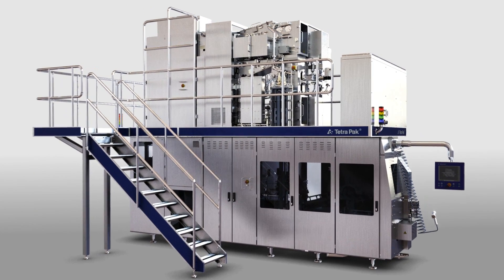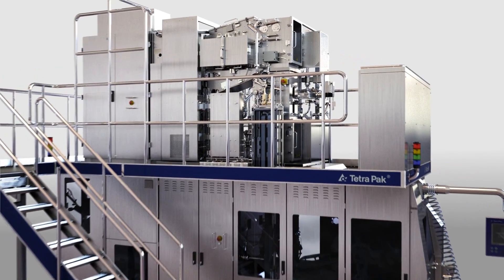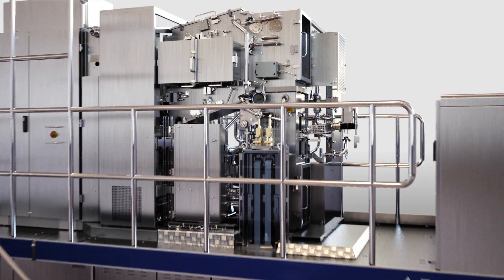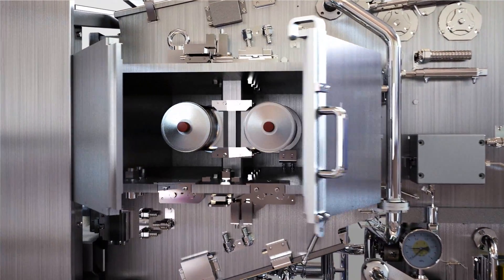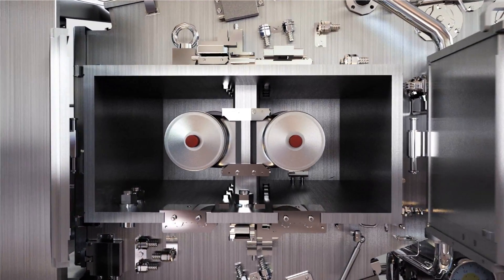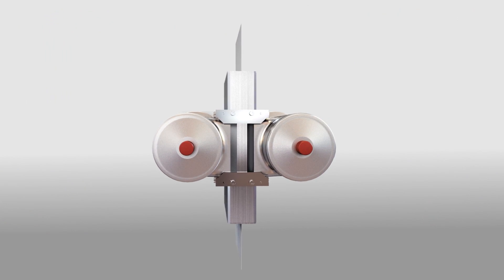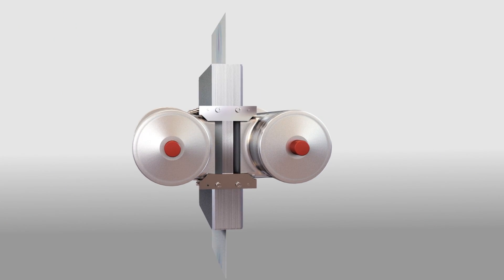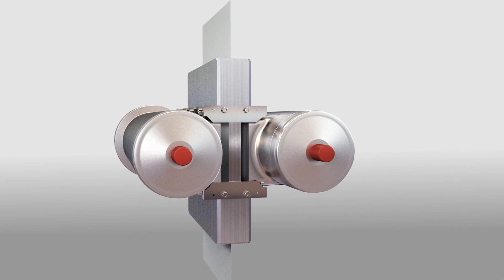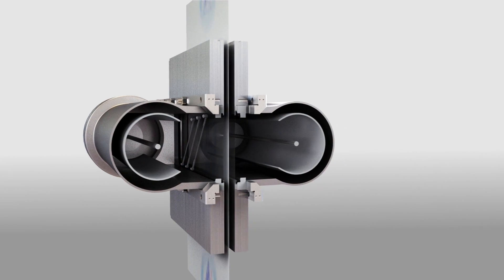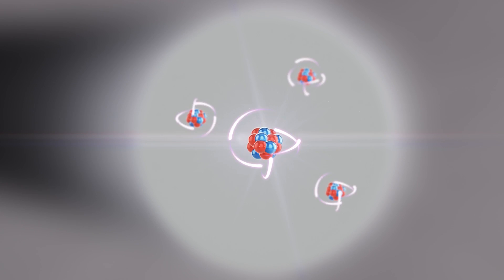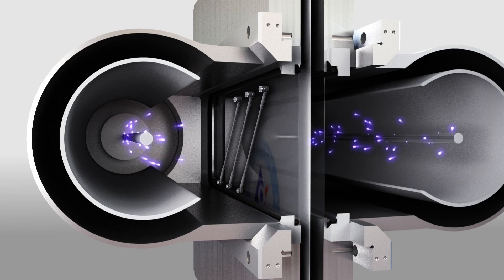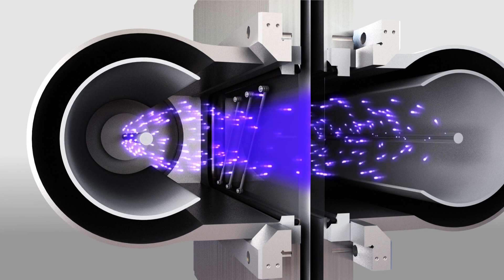The E-beam system ensures the same sterilization performance as hydrogen peroxide while offering numerous advantages like better environmental performance, higher production capacity with no increase in machine dimensions, and the flexibility to pack chilled extended shelf life and ambient products on the same machine platform. E-beam lamps emit a controlled flow of electrons.